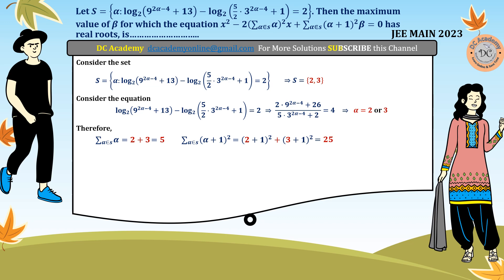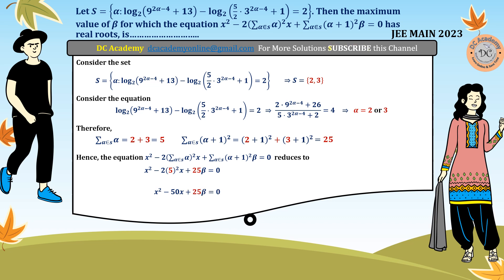The given quadratic equation is reduced by substituting the appropriate values. Substituting summation of alpha = 5 and summation of (alpha + 1) squared = 25, the equation becomes x squared plus 2 times 5 times x plus 25 beta = 0, which simplifies to x squared plus 50x plus 25 beta = 0. Now we need to find the condition for this equation to have real roots.